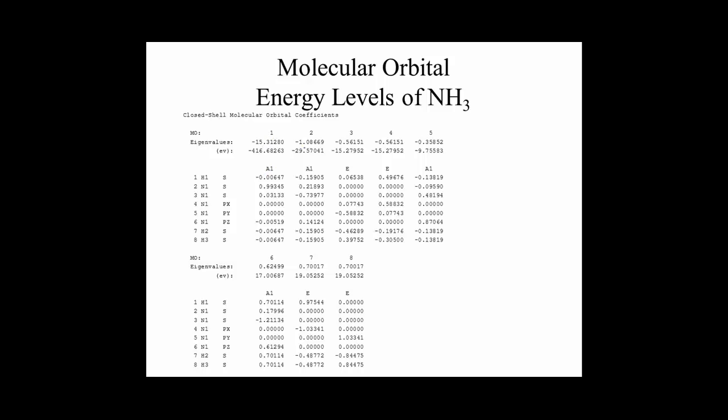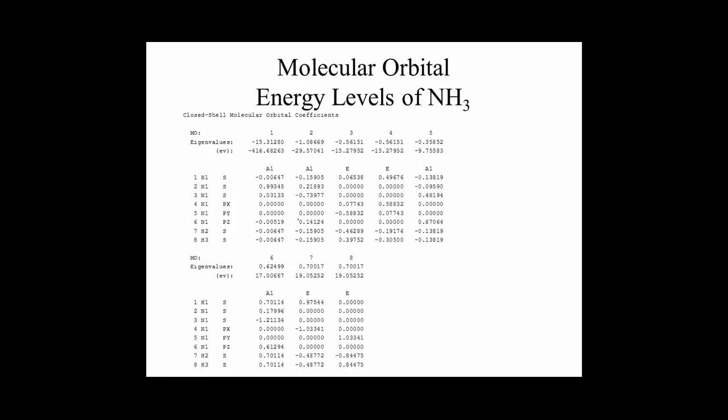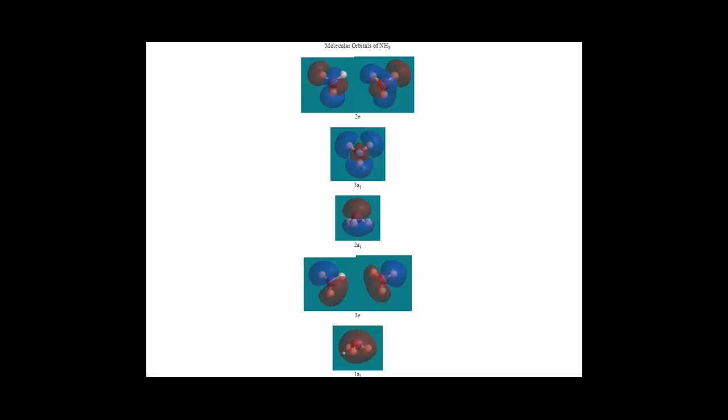So let's skip this. This is the core molecular orbitals that the computer does that we usually ignore for our shorthand. This 1A1, here we are, nitrogen 2s, is contributing to the hydrogens being contributed equally. So that's what this chart is telling us.